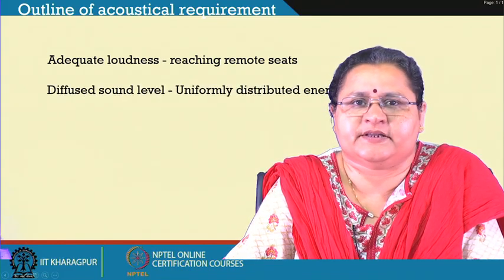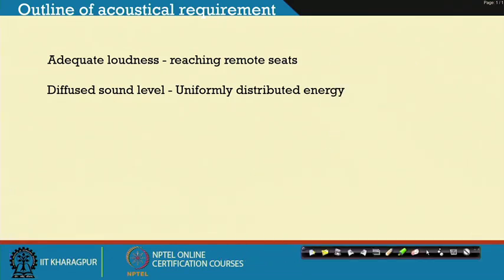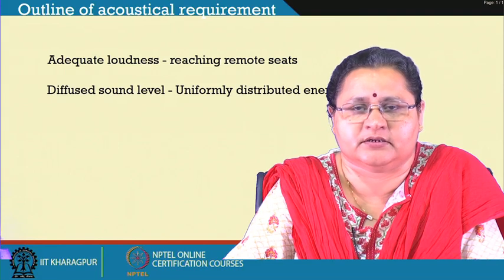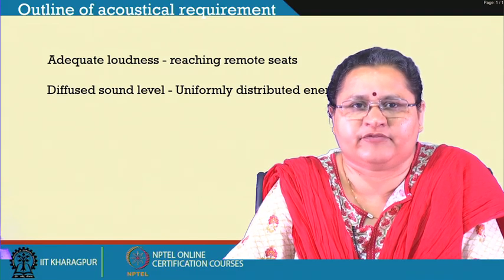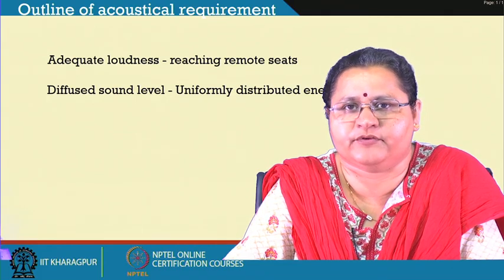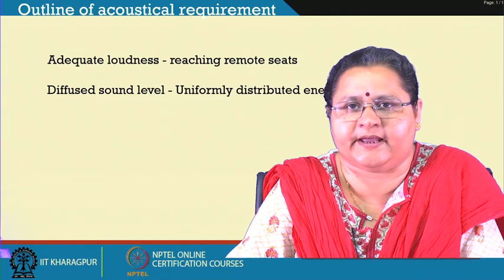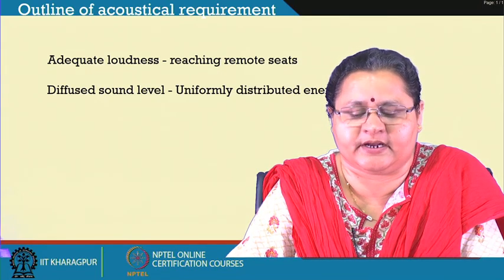We need diffuse sound level — that means sound should not be specular. Directly reflected sound should not reach individuals, so that it does not disturb individuals nor create sound shadow zones or dead spots within the space. We have to be very careful and it is best to target for diffuse sound, which will give a uniformly distributed energy level within the entire space.